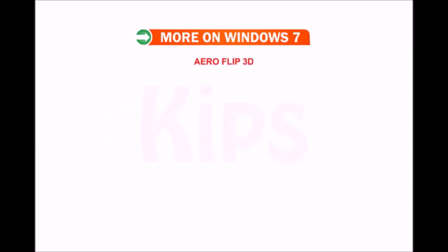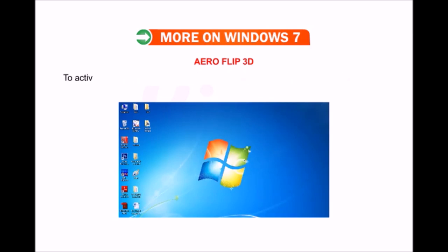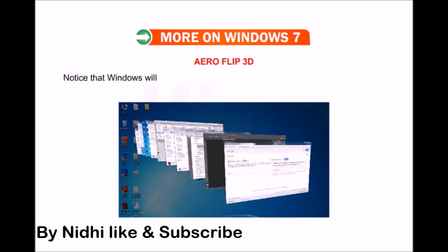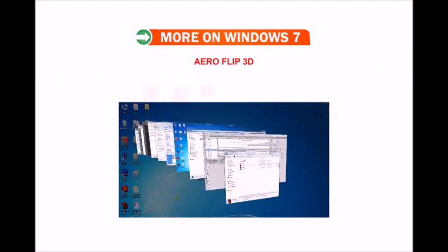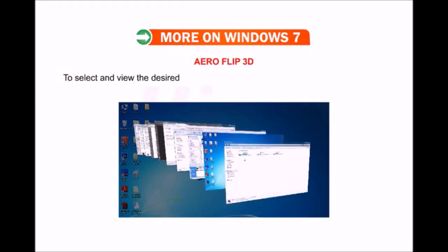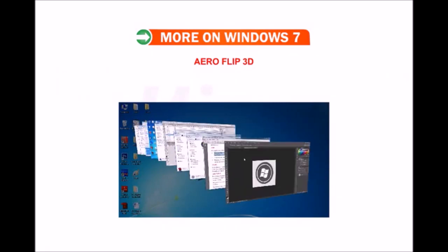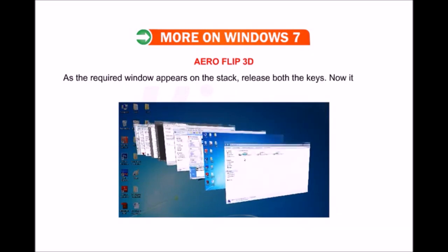Aero Flip 3D: This is an interesting feature of Windows 7 that enables you to preview all open windows as a stack. To activate the Aero Flip 3D feature, press the Windows key plus Tab key combination. Windows will automatically direct you to the desktop displaying the open windows. Hold the Windows key and use the Tab key to scroll through. As the required window appears on the stack, release both keys — it will open on the screen.